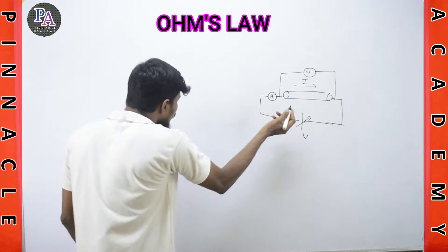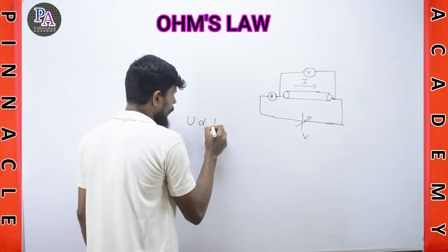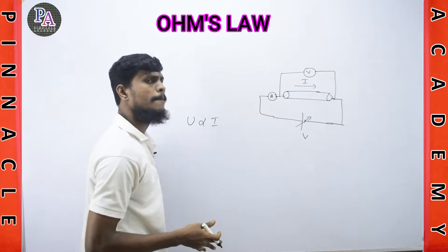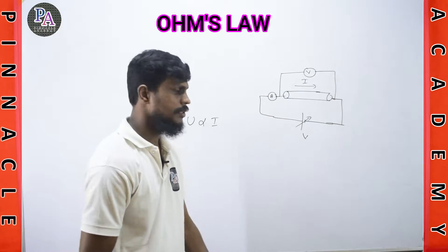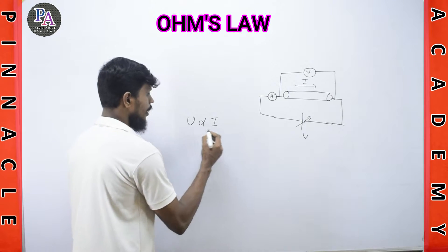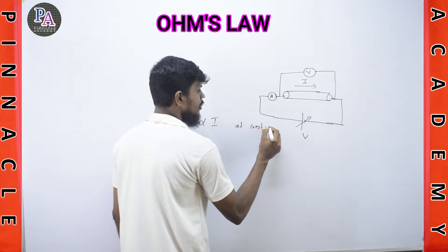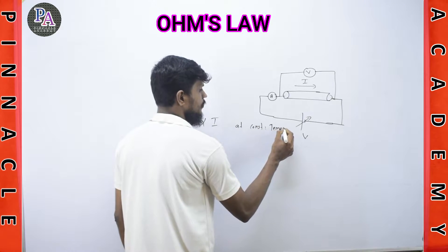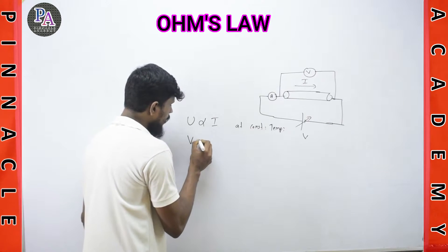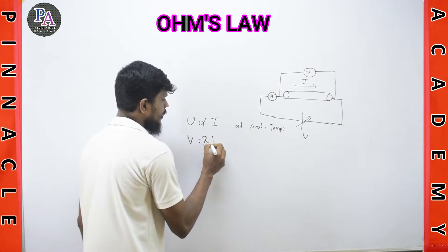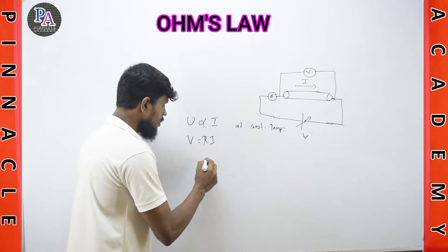In this case, voltage is directly proportional to the current passing through the conductor. This proportionality holds at constant temperature. At constant temperature, V is equal to a constant R times I. This constant R is called the resistance of the material.